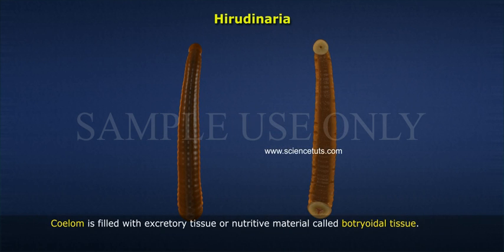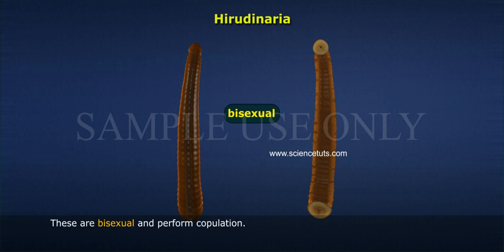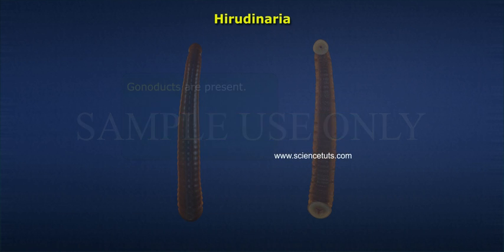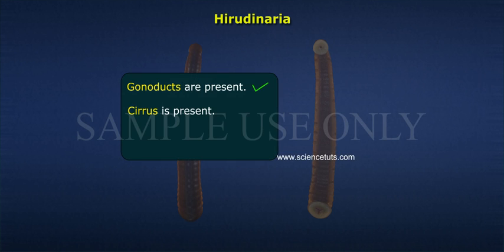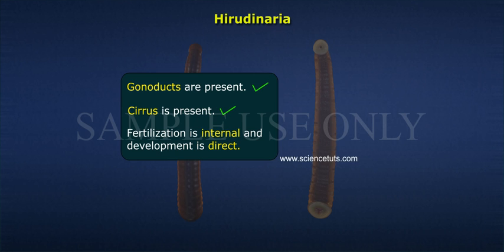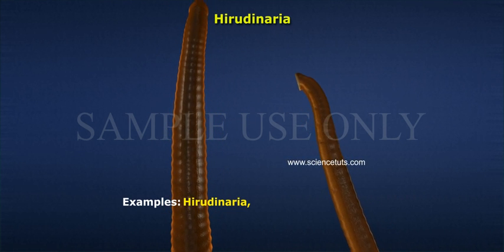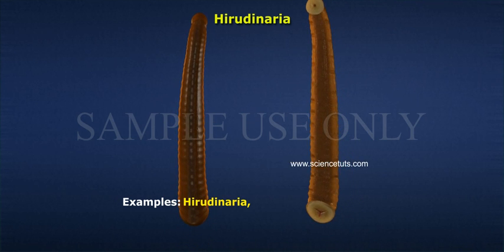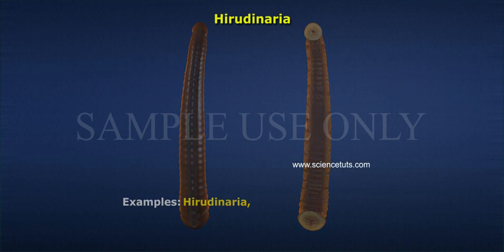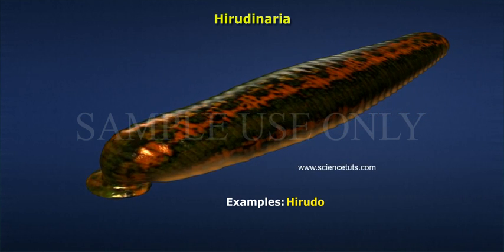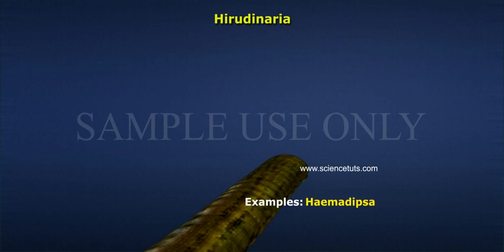The coelom is filled with excretory tissue or nutritive material called botryoidal tissue. Leeches are bisexual and perform copulation. Gonads are present in few segments; gonoducts are present. Cirrus is present. Fertilization is internal and development is direct. Examples include Hirudo medicinalis, Haemadipsa, and Hirudinaria.